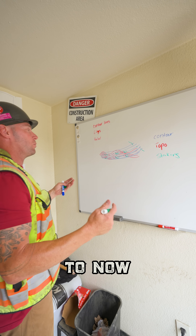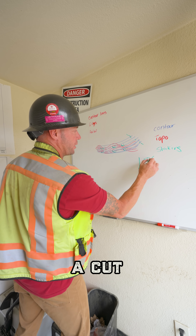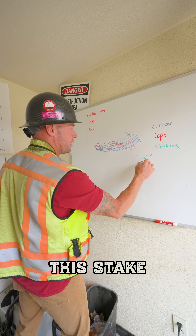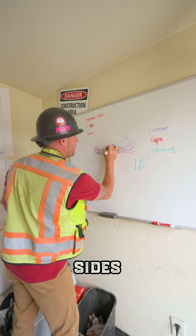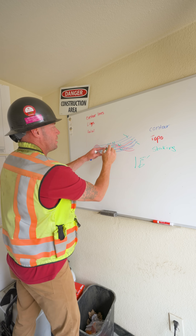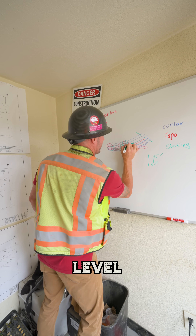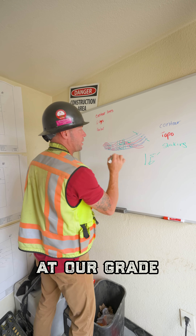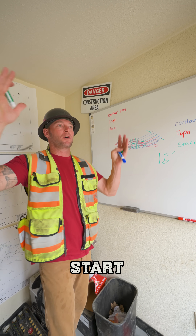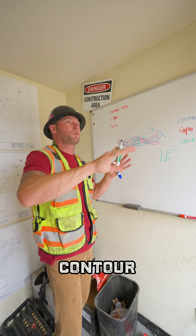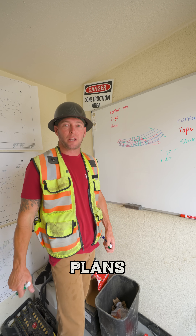Now, what happens if you've got a stake and there's five foot of cut on that stake? We'll cut everything on the sides of these stakes and it'll just be a big island. Once that island's done, we can pull a level and drop down to make sure we're at our grade, then take the island out. That's how you start processing these contour lines and finishing up the slope. Just pay attention to your plans.